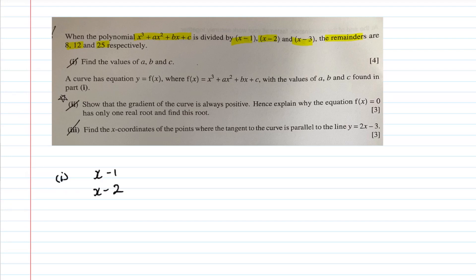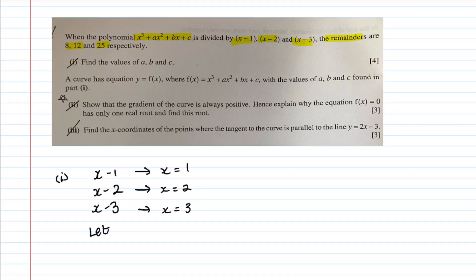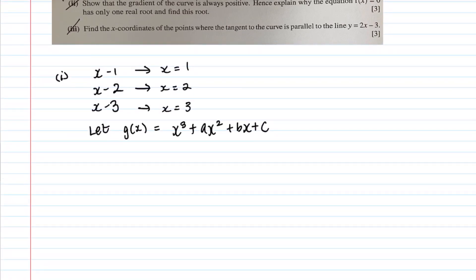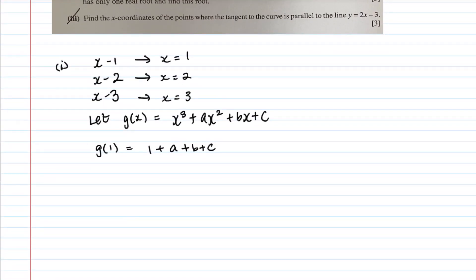For this question, having divisors (x−1), (x−2), and (x−3) means x = 1, x = 2, and x = 3 are points on the curve. Let g(x) = x³ + ax² + bx + c. Substituting x = 1: g(1) = 1 + a + b + c, and this equals the remainder 8.